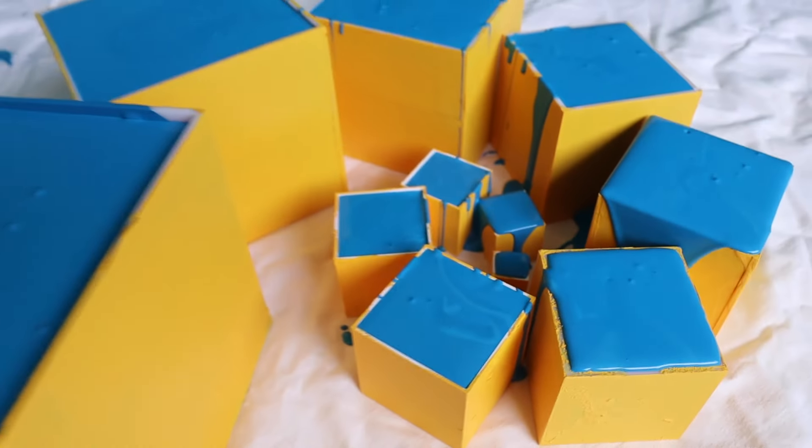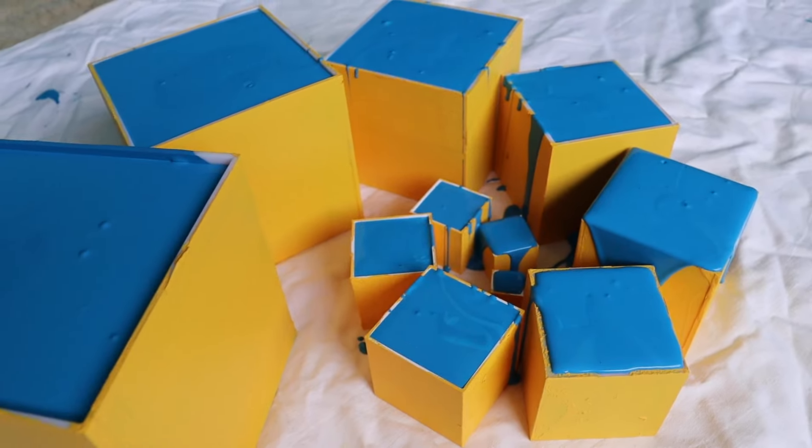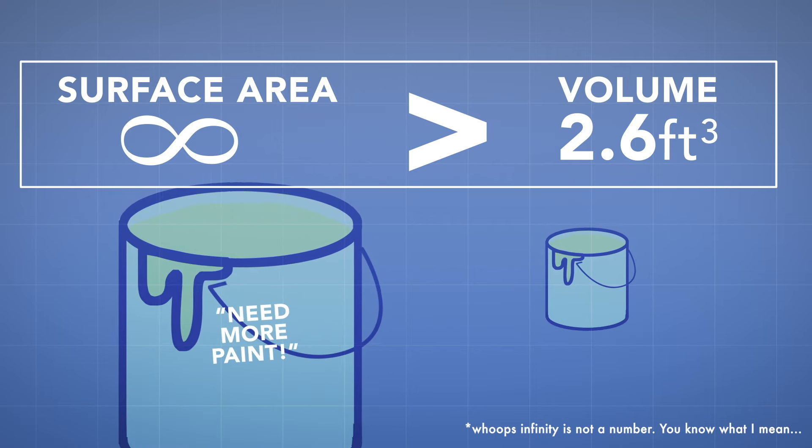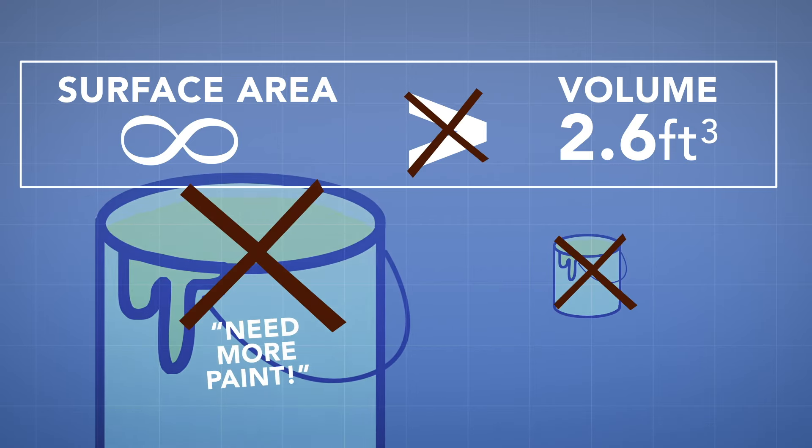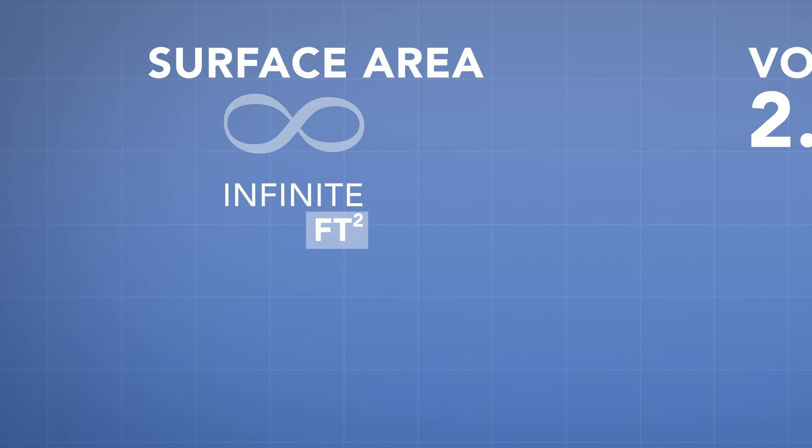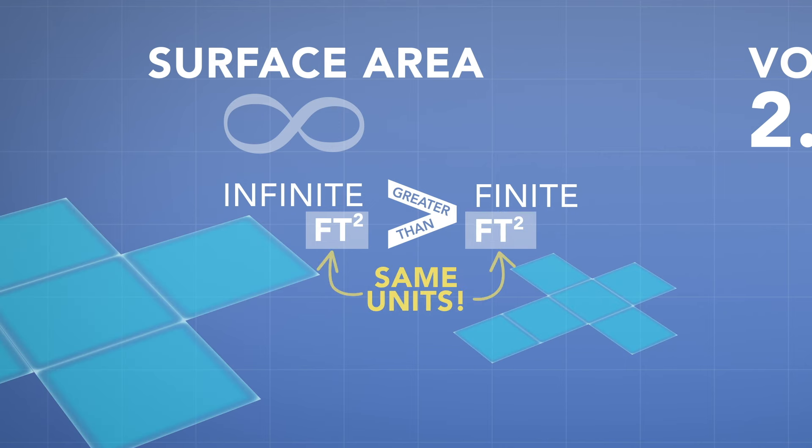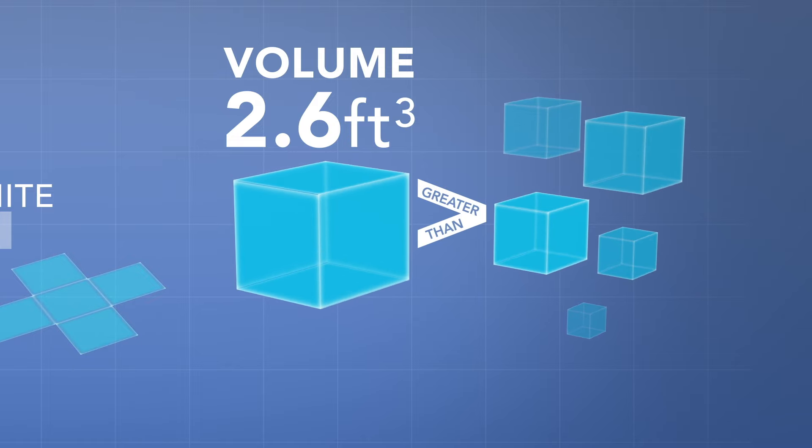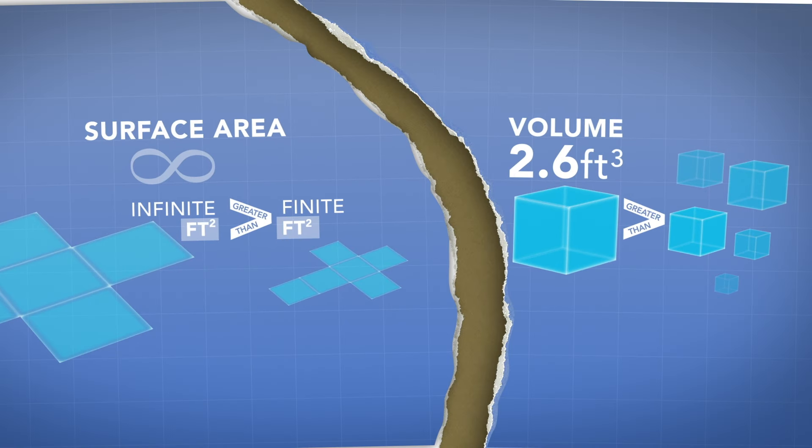We get tripped up because of everyday situations like needing more paint to fill a cube than coat it. And this makes us think that volume is somehow bigger than area. But these numbers aren't saying we need a bigger amount of paint to coat the surface area than to fill the volume. The surface area of all the cubes measured in feet squared is larger than any finite number of square feet. It's a comparison to other surface areas. The number 2.6 feet cubed is a comparison to other volumes. They aren't a comparison with each other.